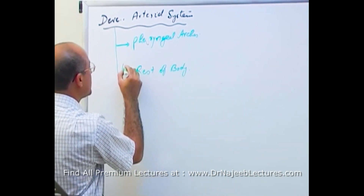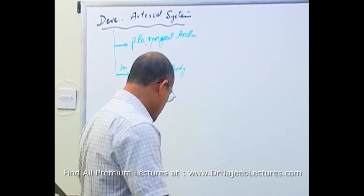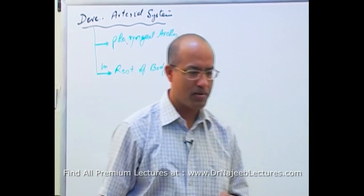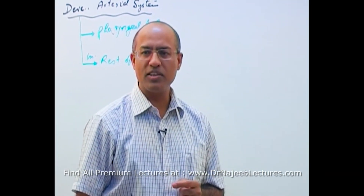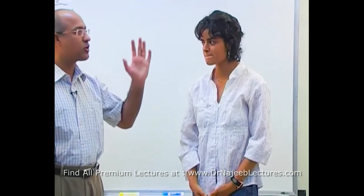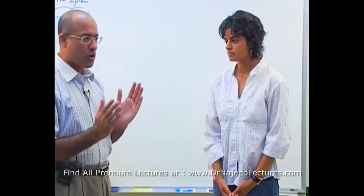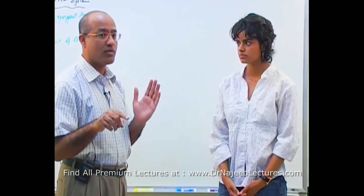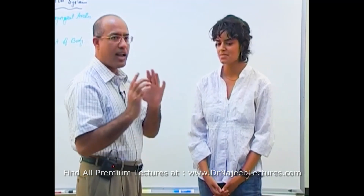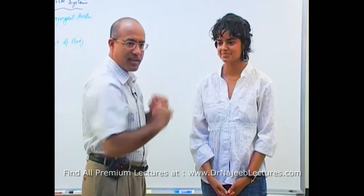Let me explain with an example. We have Anu here — let's imagine she is a small embryo. We are going to see how she is going to develop the arterial system. In the embryo, in this region, there is a pharynx.